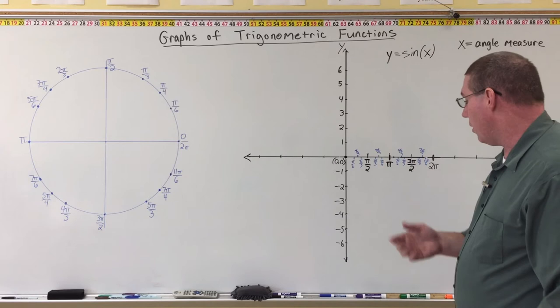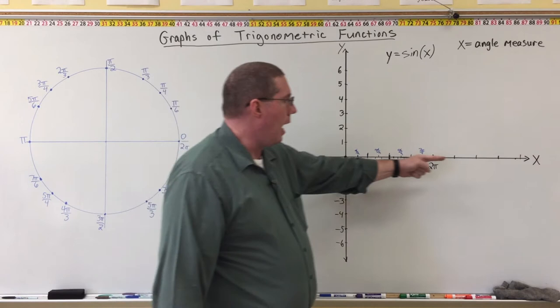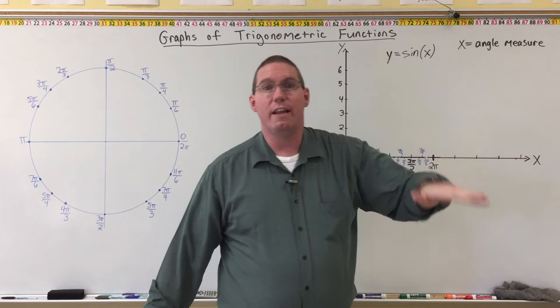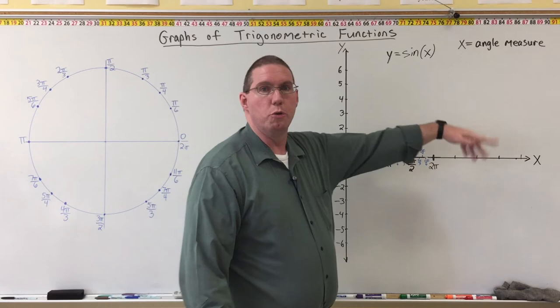Now I want to take this further. One of the great things about a coordinate plane is that the x-axis continues toward positive infinity — 100, 200, 1,000, 10,000, a million, a billion, all in that direction. And going left from the origin takes us toward negative values: negative 1, negative 2, negative 3, all the way toward negative infinity.